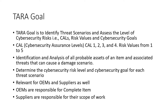The goal of TARA is to identify three different things. The first one is CAL level, that is Cyber Security Assurance Levels. The second one is risk values, and the third one is cyber security goals. TARA's goal is to identify threat scenarios and assess the level of cyber security risk — CALs, risk values, and cyber security goals. CALs are from one to four, similar to the ASIL levels in HARA. Risk values range from one to five, and we will also have cyber security goals as an outcome.